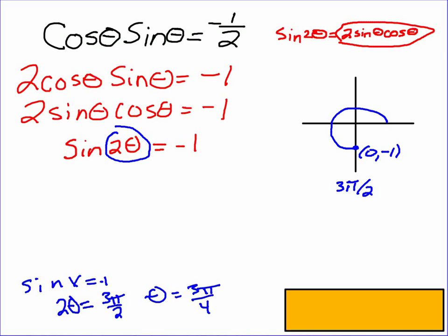Okay, so on our unit circle, 3 pi over 4 is here. So our theta in this case is 3 pi over 4. I'll convert that to degrees, also known as 135 degrees.